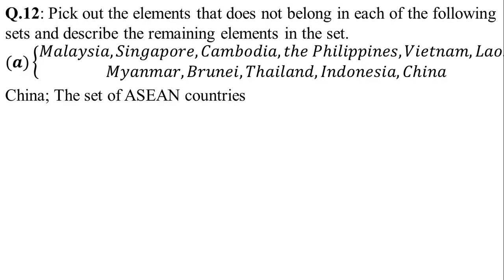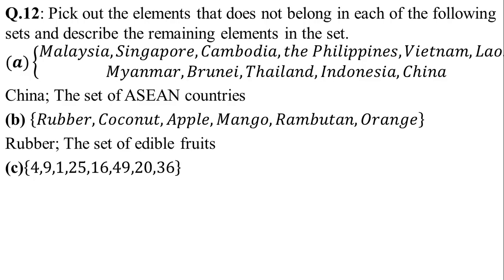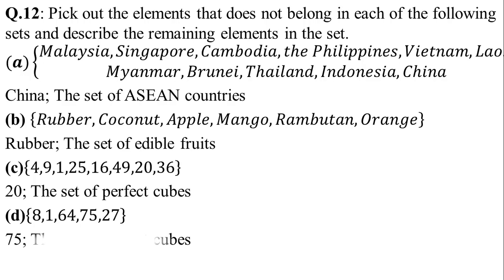In part B, the set contains all fruits except rubber. So we take out rubber. The remaining set is the set of edible fruits. In part C, the set is {4, 9, 1, 25, 16, 49, 20, 36}. Except for 20, all numbers are perfect square numbers. So 20 does not belong to this set. The remaining set is a set of perfect squares. In part D, all numbers are perfect cubes except 75, so 75 does not belong to this set. The remaining set is a set of perfect cubes.